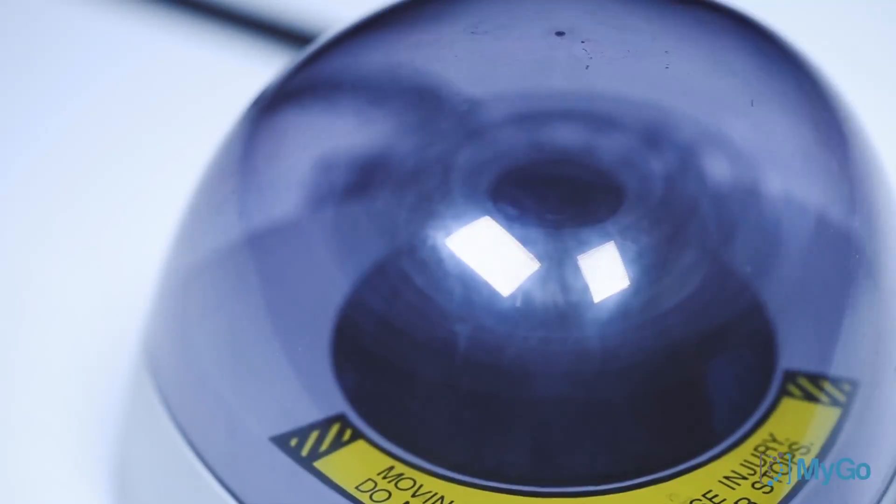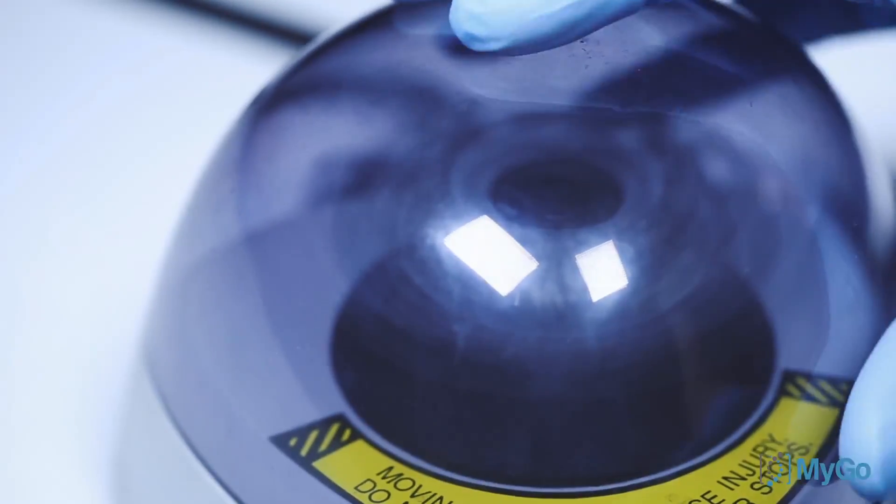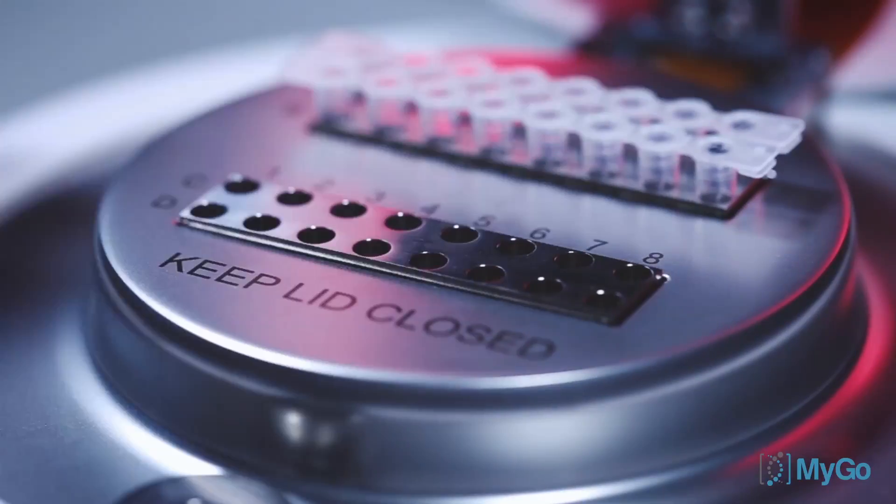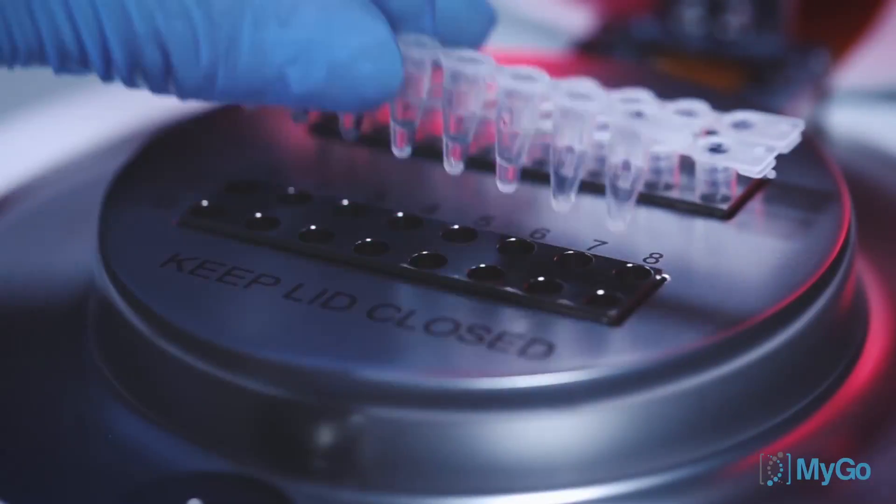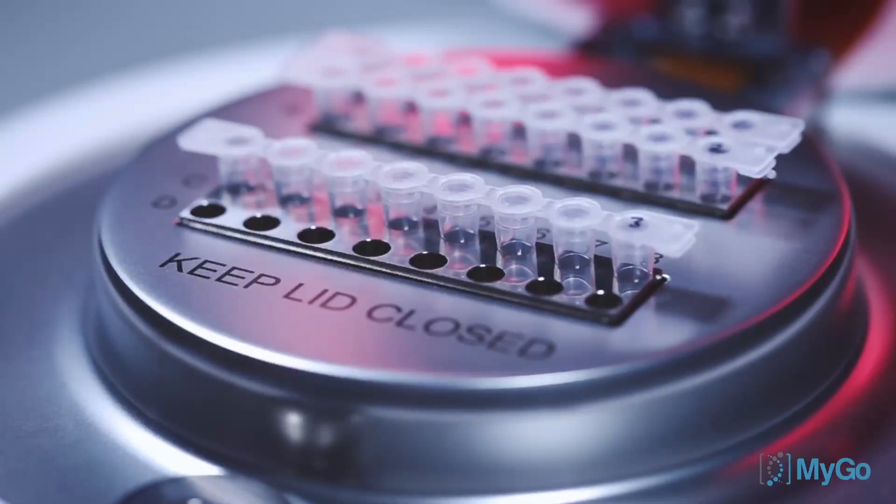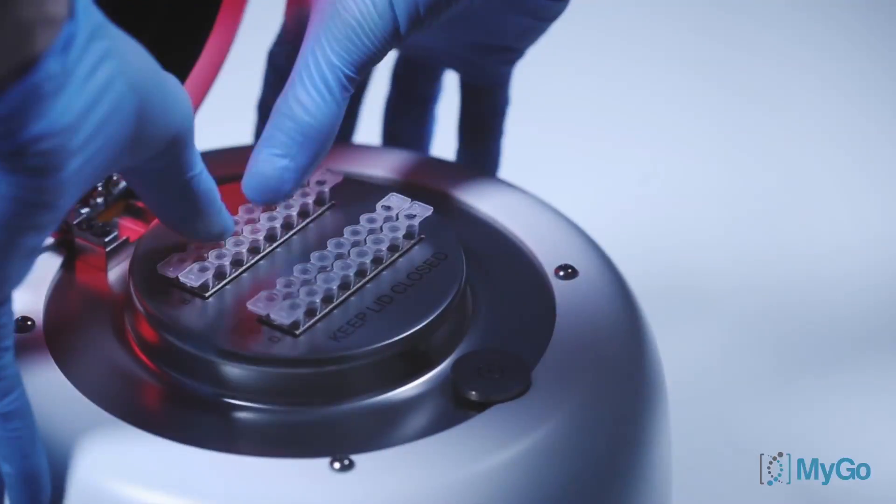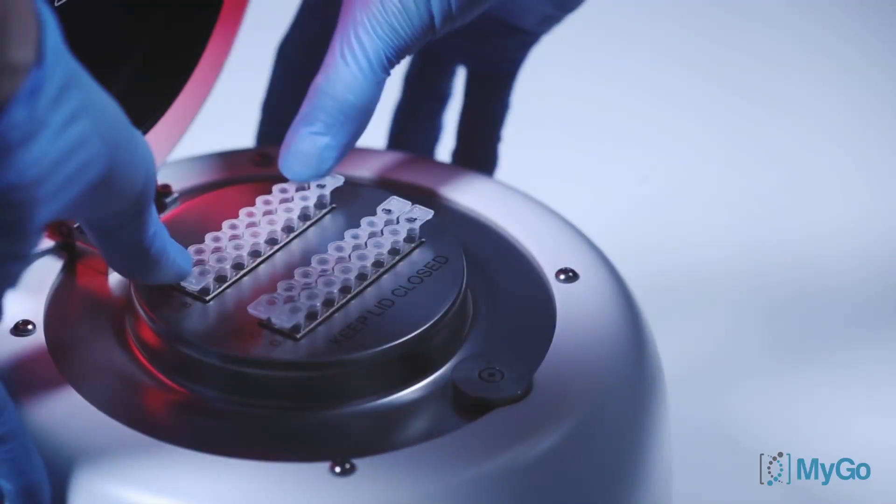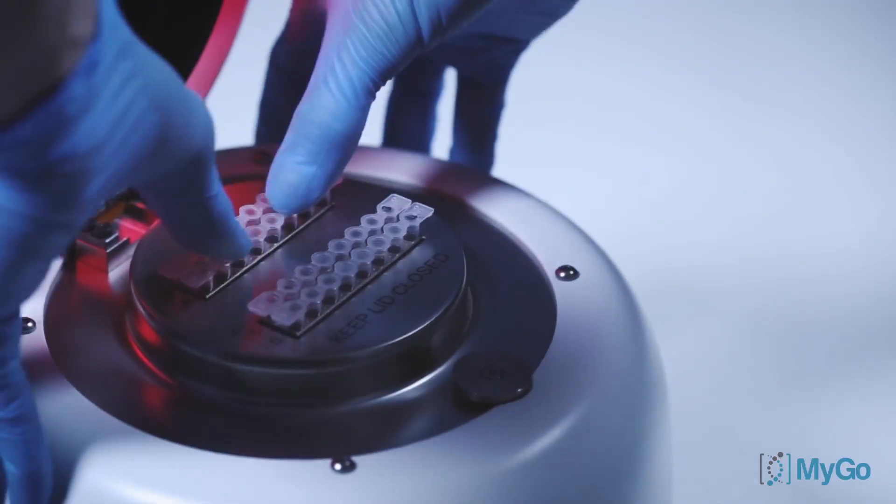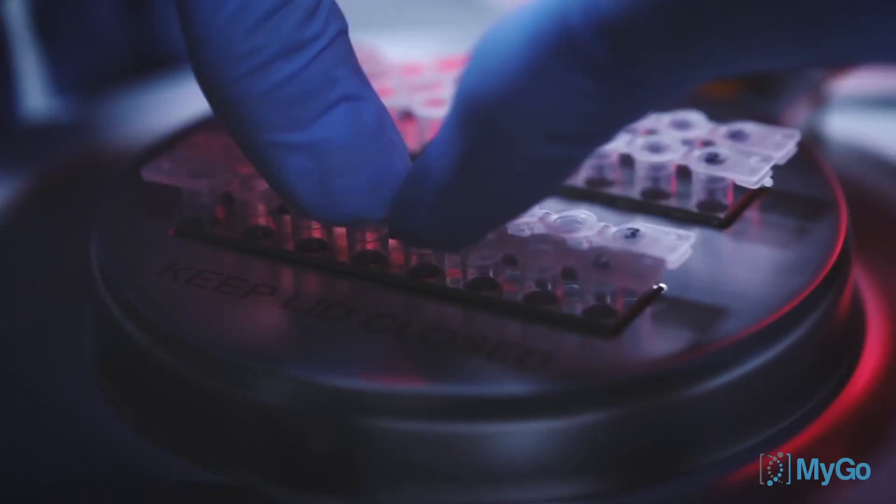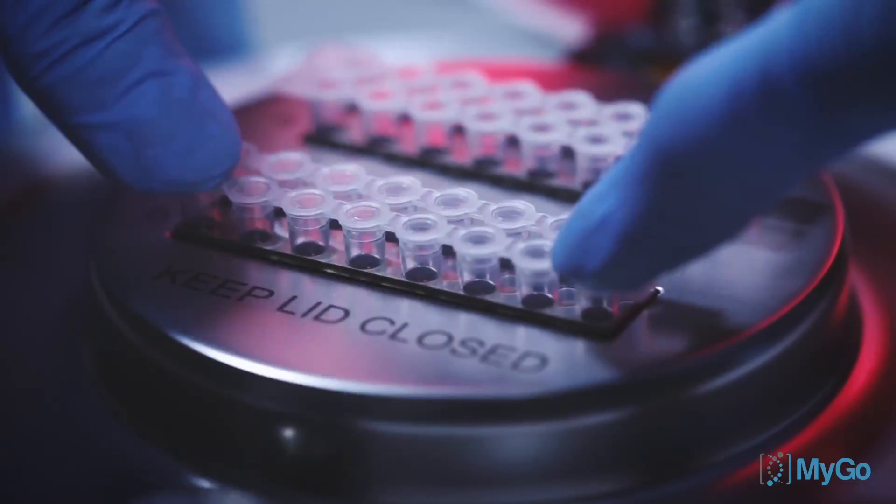Remove bubbles by centrifuging down the strips. Load the tubes into your MYGO Pro. Press down to ensure a secure fit. Close the lid until it locks and you're ready to begin your experiment.